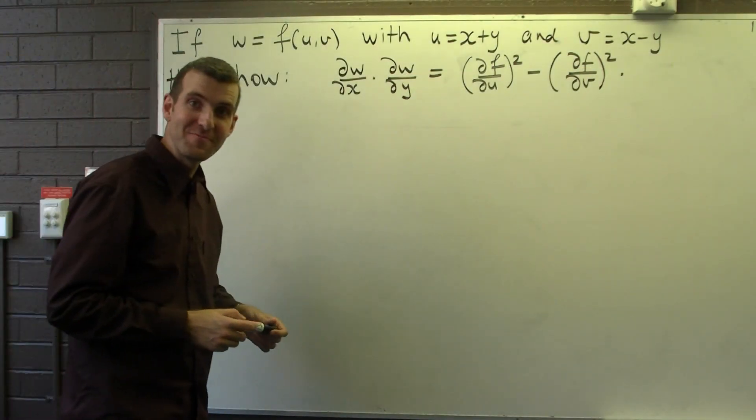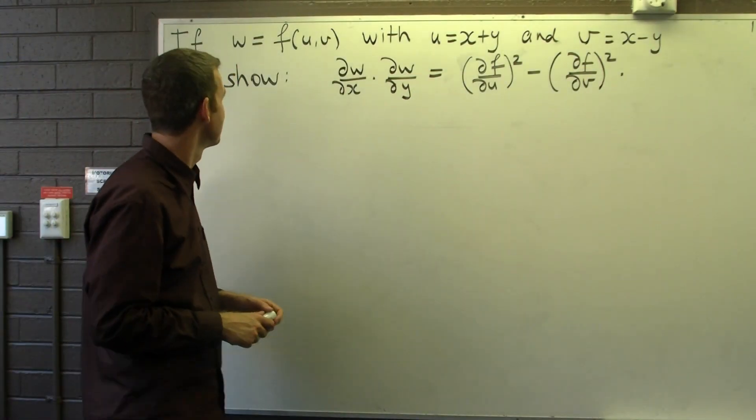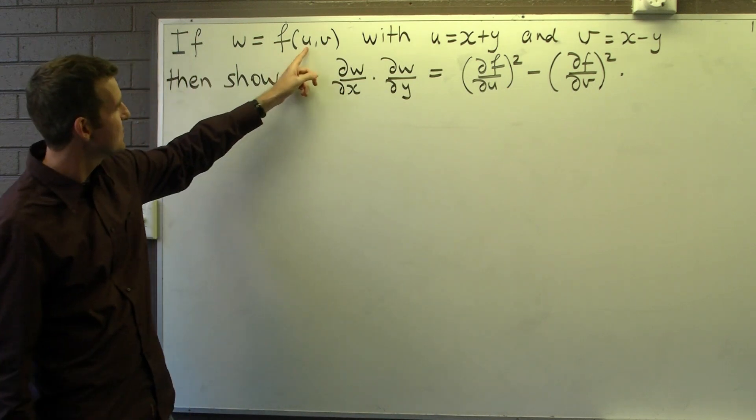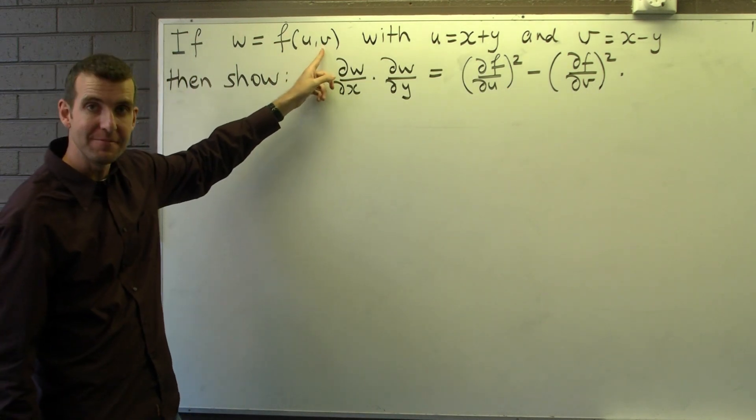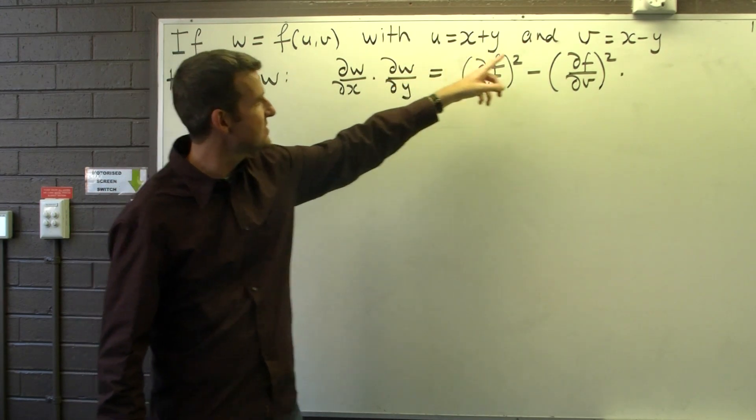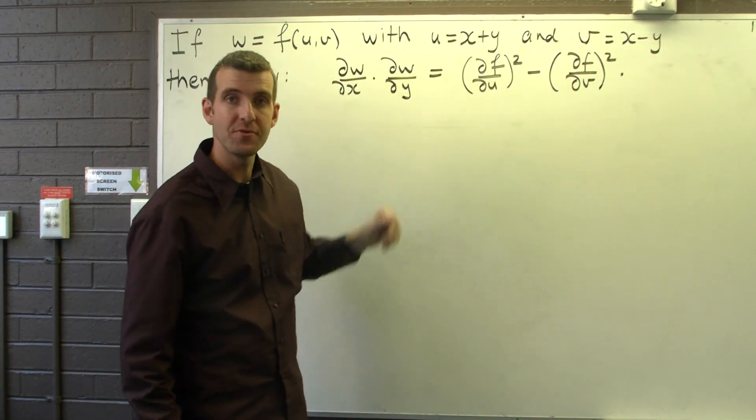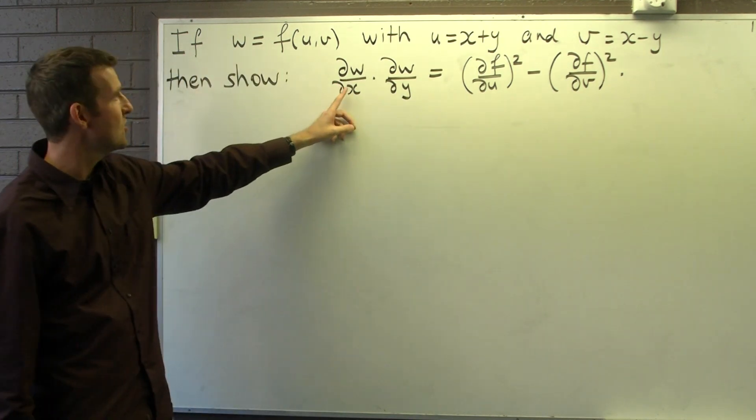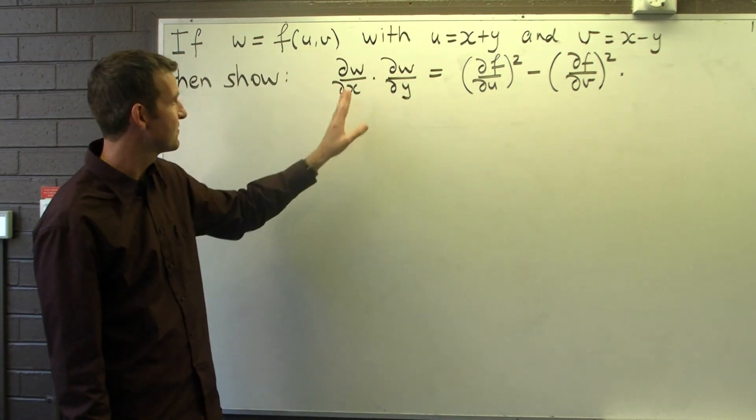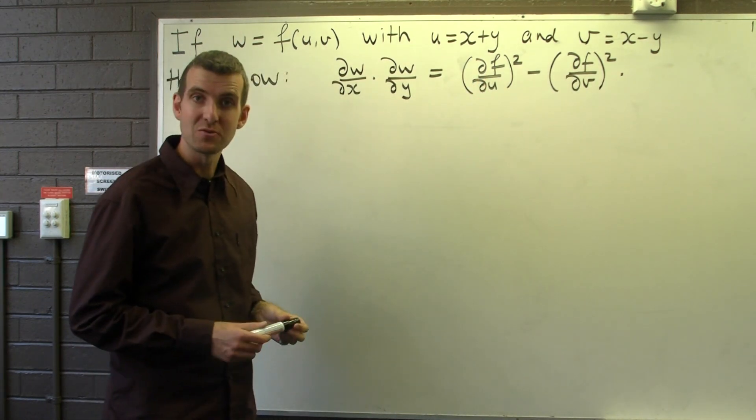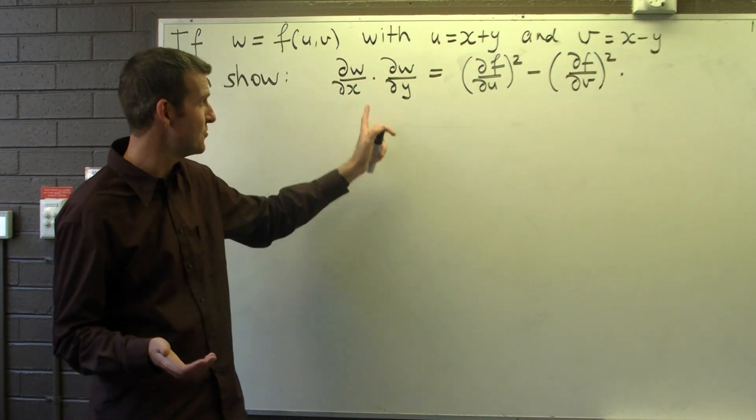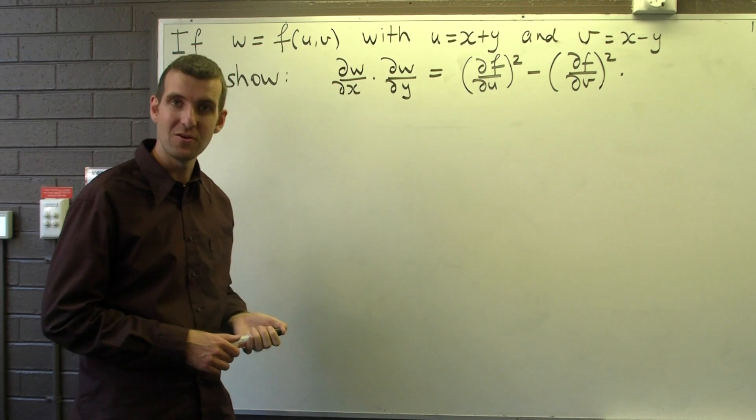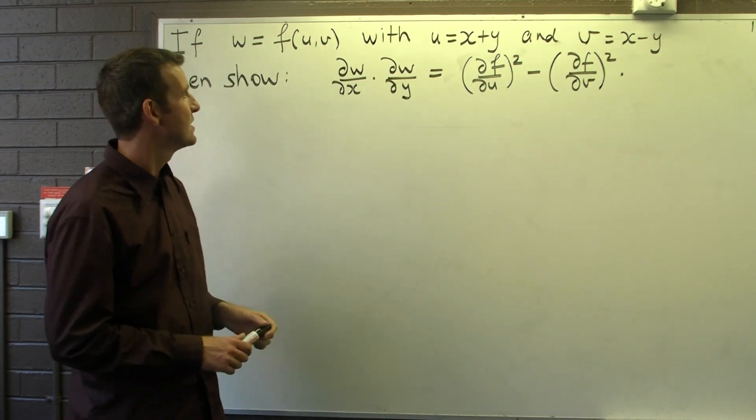So let's have a look at the following problem. We have a function that depends on u and v, and u and v themselves depend both on x and y. We're asked to show that the following identity holds for these particular partial derivatives. So how do we prove that this identity holds? Well, obviously we need to do some sort of partial differentiation here.